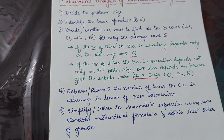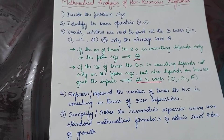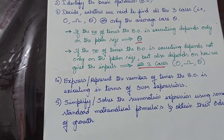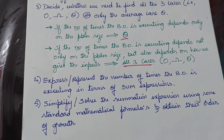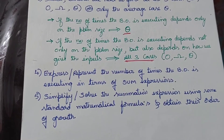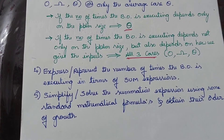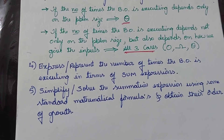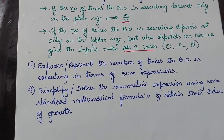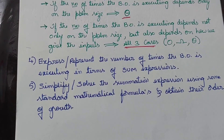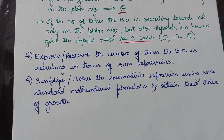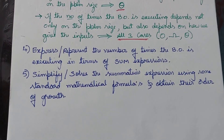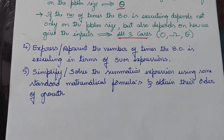To summarize, the five steps for analyzing a non-recursive algorithm are: first, decide the problem size; second, identify the basic operation; third, determine whether to find all three cases or only Big Theta — if the basic operation count depends only on problem size, find only Big Theta; if it also depends on input arrangement, find all three cases (Big Omega, Big O, and Big Theta); fourth, write the summation expression; and fifth, solve it using standard mathematical formulas to obtain the order of growth.